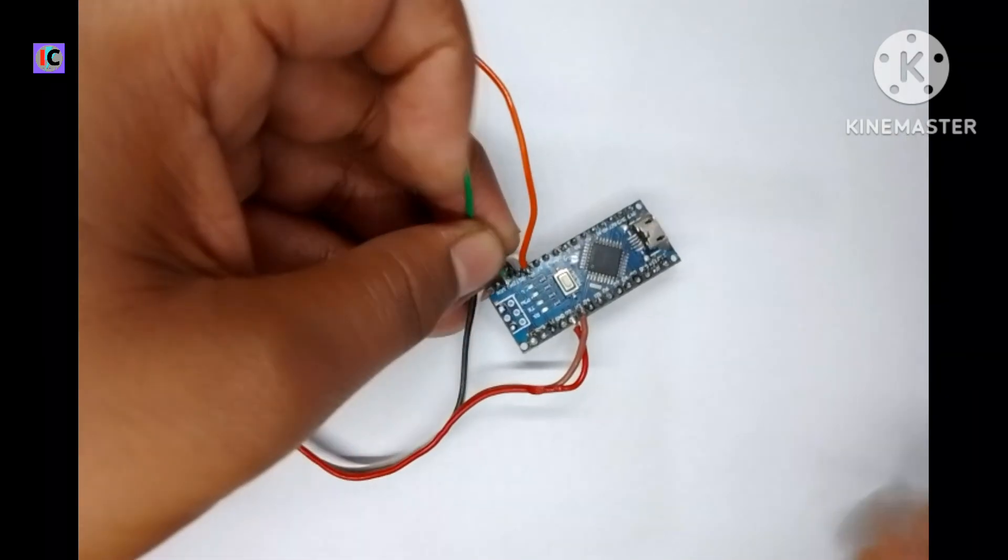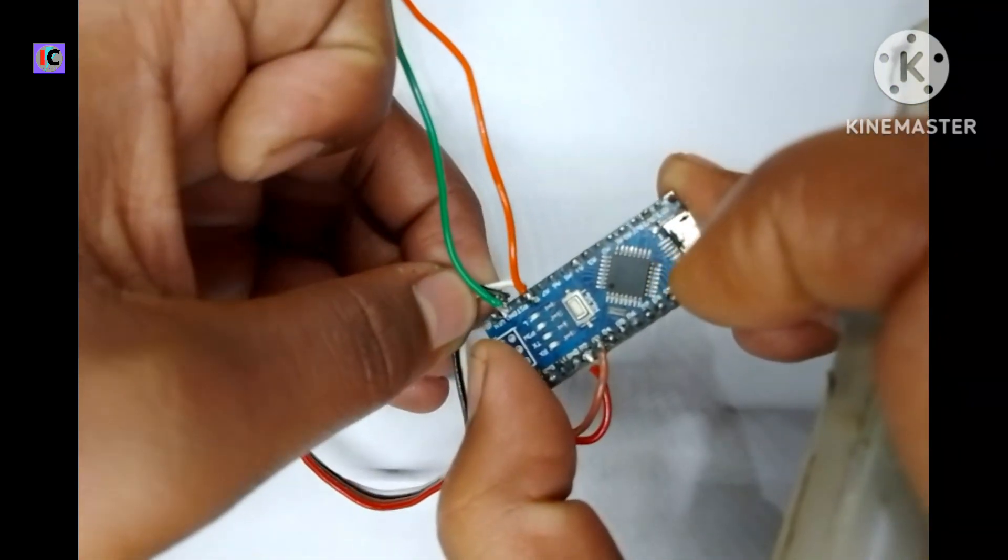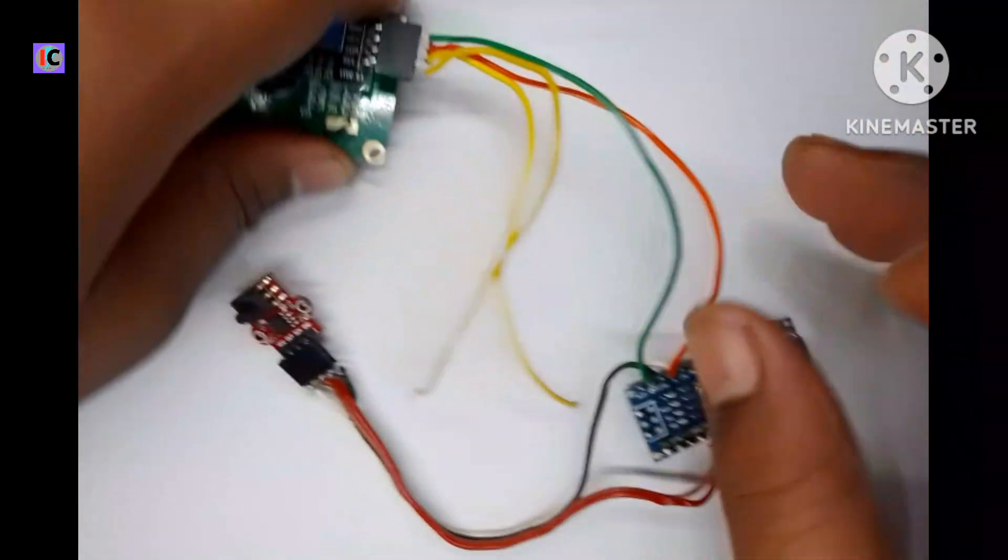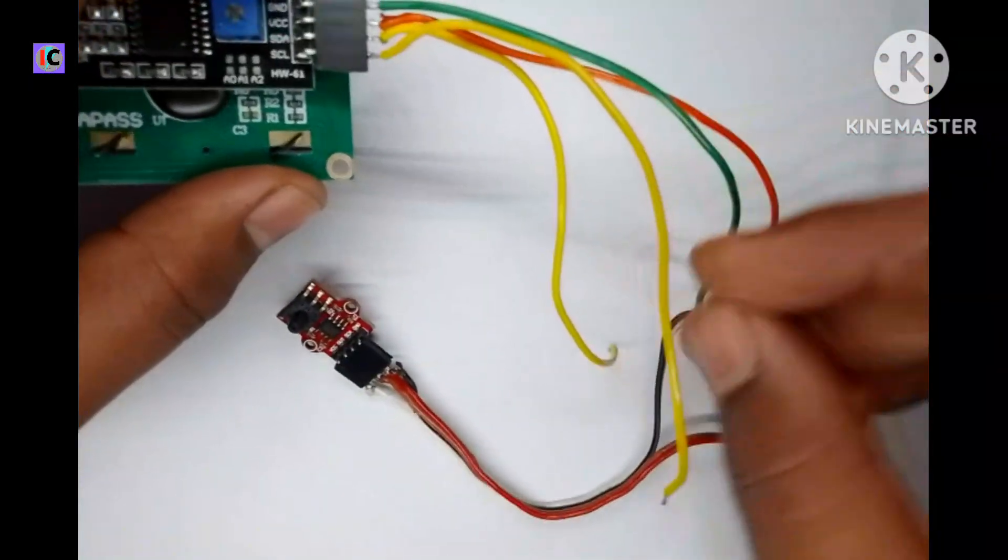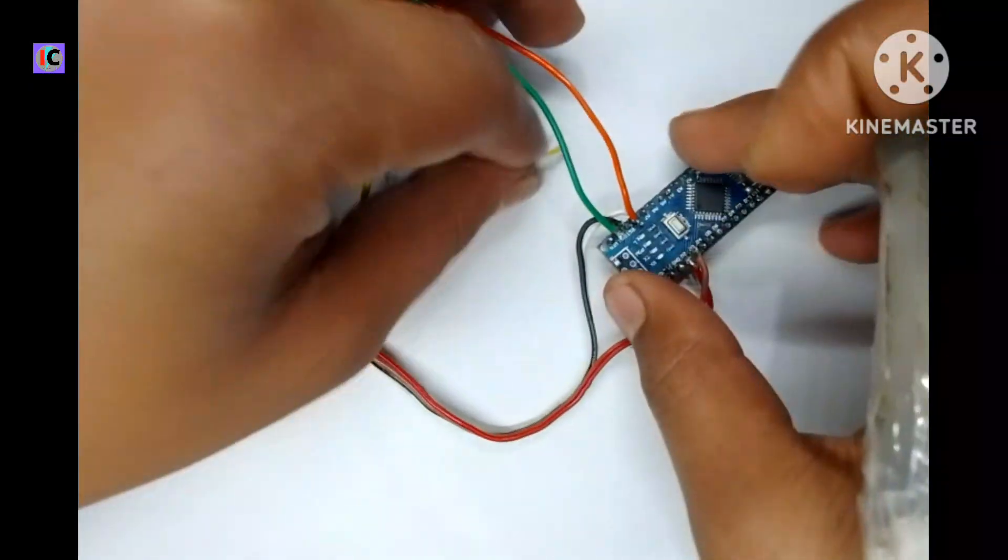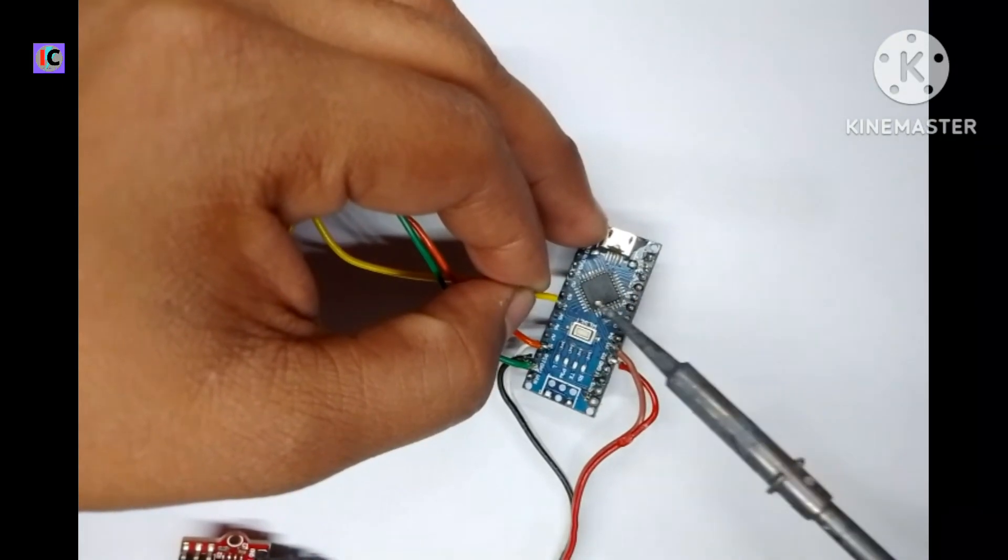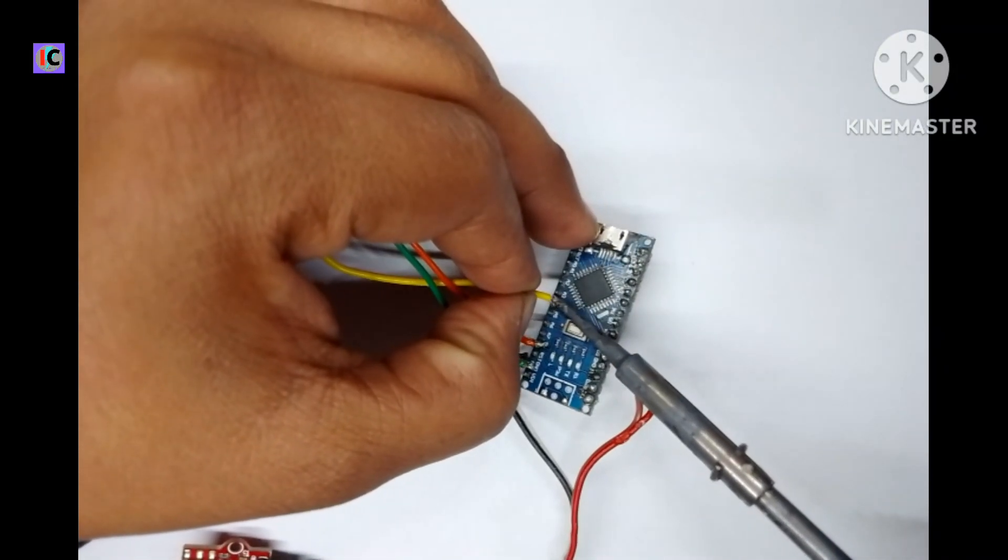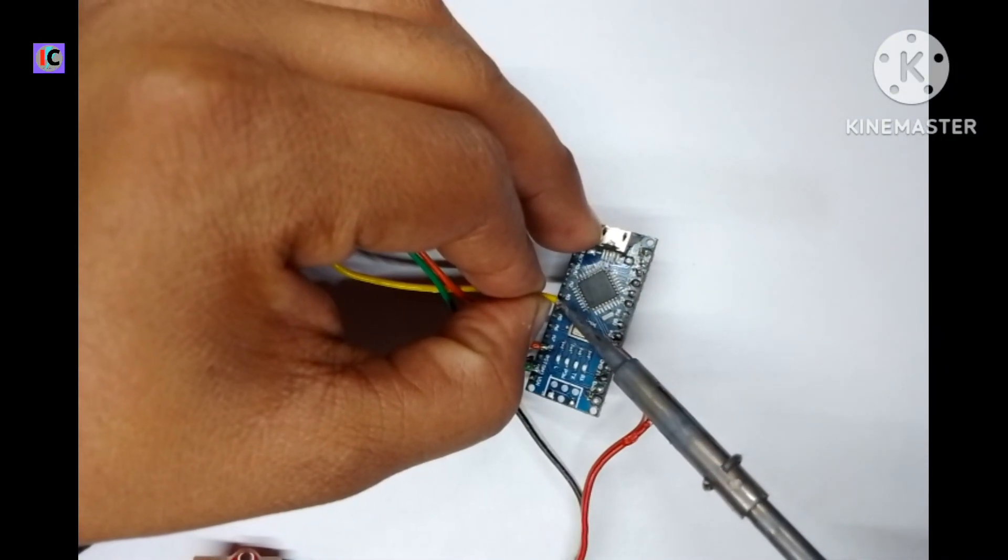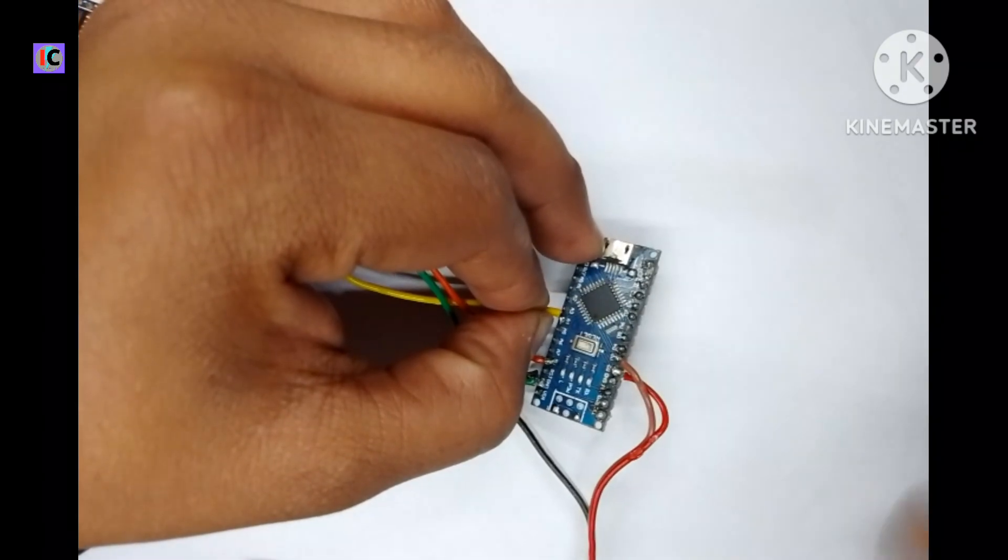After this we will connect the SDA and SCL pins respectively with analog pin number A4 and A5, as the I2C port of this Arduino is A4 and A5 pins. You can use any other microcontroller which has I2C port.